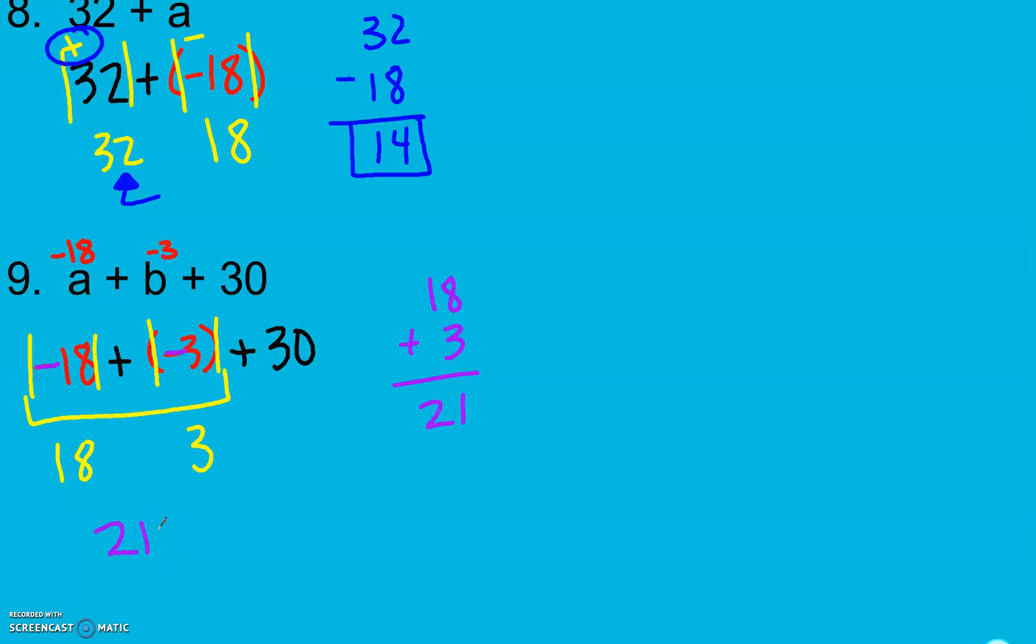To take our sign, we look back. Both of these are negative, so it's going to be negative. And then I'm going to bring down my plus 30.